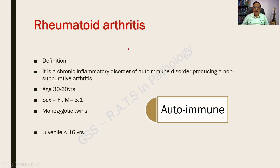Rheumatoid arthritis is defined as a chronic inflammatory disorder of autoimmune origin producing a non-suppurative arthritis — meaning there is no infection. The age of onset is 30 to 60 years, and females have a greater predilection than males in a ratio of 3:1. It is common in monozygotic twins. There is also a juvenile variant occurring in children less than 16 years. Importantly, it is a prototype autoimmune disorder, just like SLE.